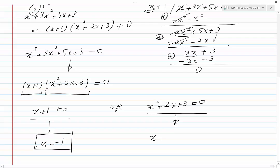x would be minus b plus or minus root b squared minus 4ac divided by 2a.